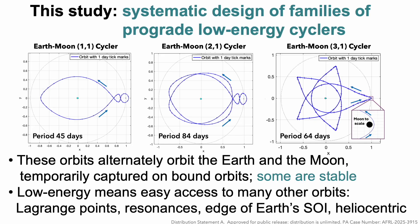The low energy aspect means there's easy access to many other orbits of interest, like the Lagrange point orbits around them, Earth-Moon resonances, the edge of the Earth sphere of influence, even heliocentric orbits.